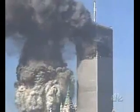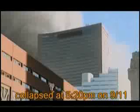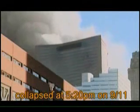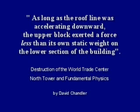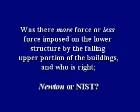The three largest structural failures in history all happened on 9-11. The National Institute of Standards and Technology, or NIST, was tasked with providing a report as to the cause of their destruction, and they concluded that the primary cause was from normal office fires. In their final tower report, NIST wrote: 'The downward movement of the structural block was more than the damaged structure could resist, and the global collapse began.' But in 2010, David Chandler wrote a paper called 'Destruction of the World Trade Center North Tower in Fundamental Physics.' Citing Newton's laws, he concluded: 'As long as the roof line was accelerating downward, the upper block exerted a force less than its own static weight on the lower section of the building.' So was there more force or less force imposed on the lower structure by the falling upper portion of the buildings? And who is right?